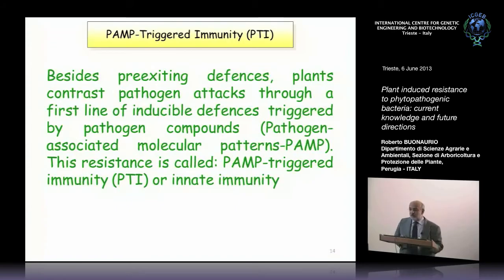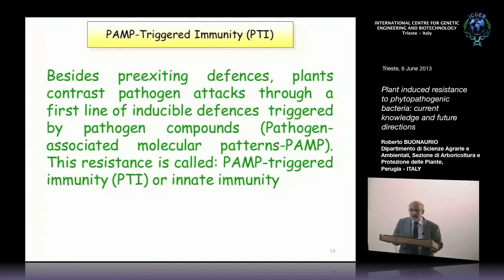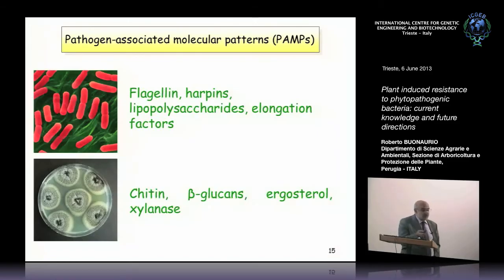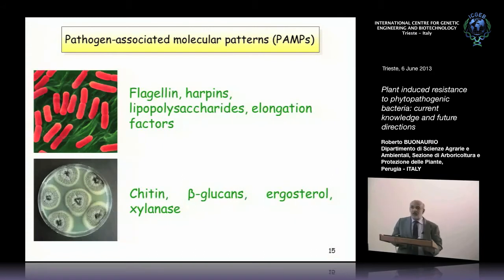In addition to pre-existing defenses, plants contrast pathogen attacks through a first line of inducible defenses triggered by pathogen compounds. As in animals, we refer to these as Pathogen-Associated Molecular Patterns — PAMPs. This resistance is called PTI, PAMP-triggered immunity. PAMPs include many bacterial components such as flagellin, the component of the flagella, and harpins — proteins produced by many gram-negative bacteria that constitute part of the Hrp system, a type III secretion system.